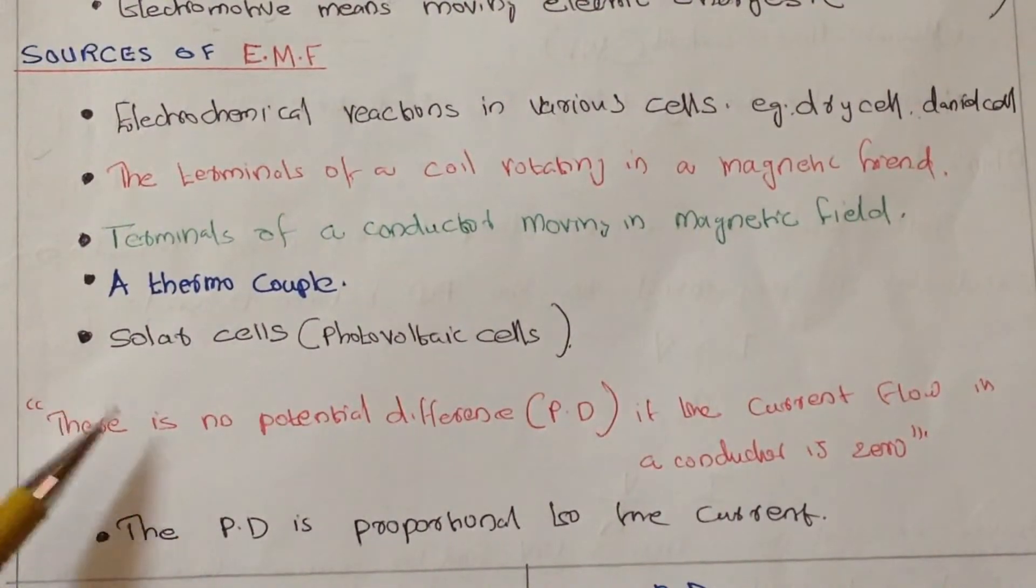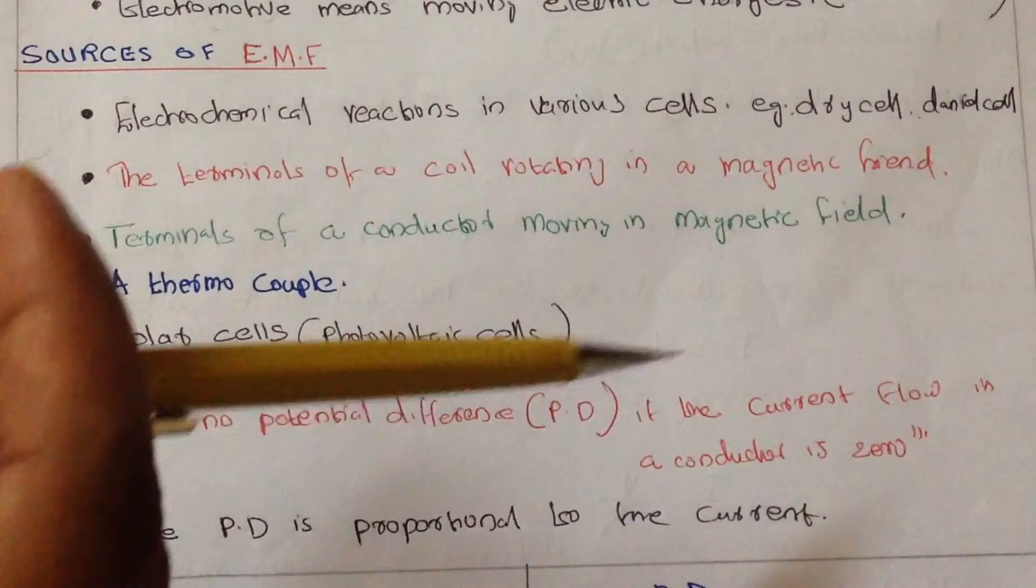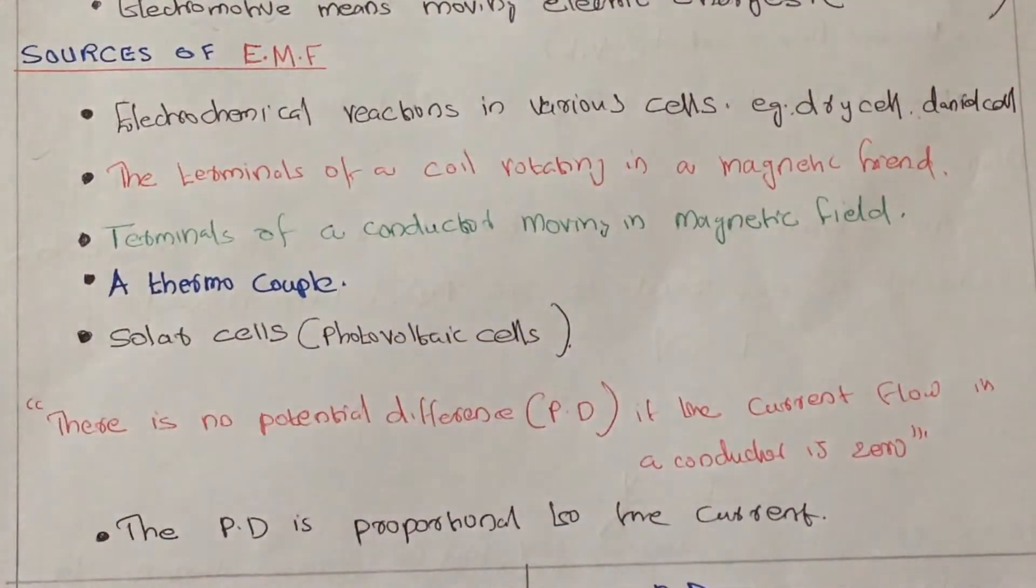Some notes: there is no potential difference if the current flow in the conductor is zero. And the potential difference is always proportional to the current.